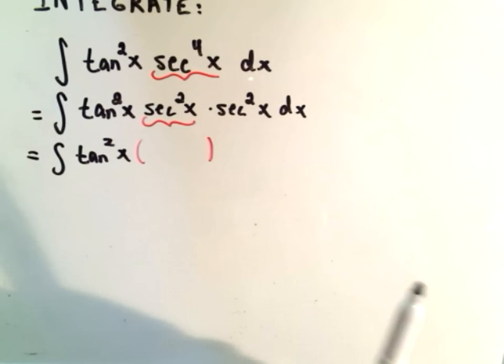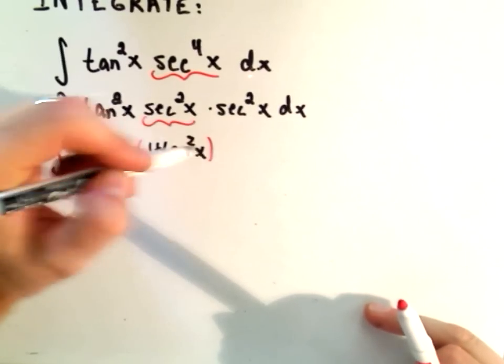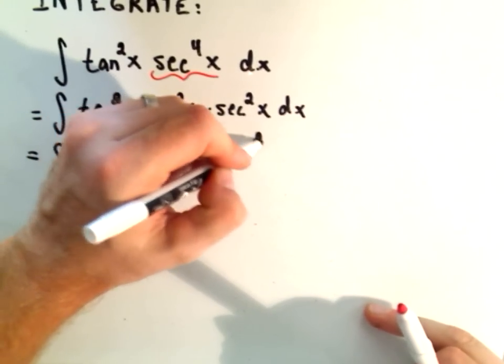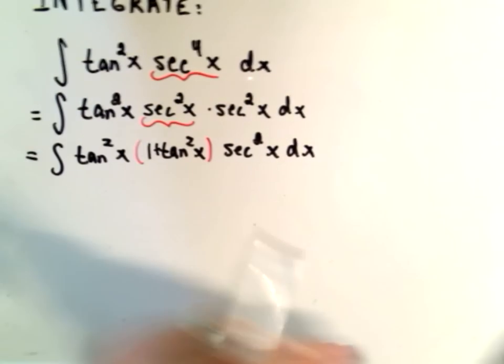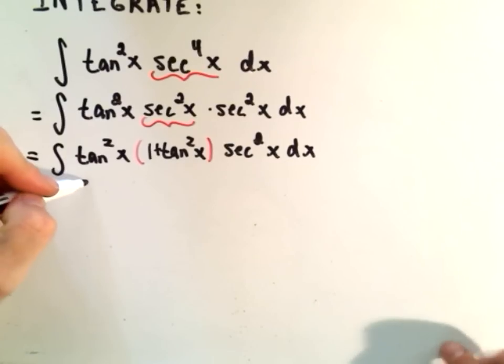So we're going to use our trig identity that secant squared is 1 plus tangent squared. Okay, so here's our trig identity, 1 plus tangent squared of x. Again, we still have our other secant squared hanging out. So again, there's our trig identity. And now we just do a u-substitution.